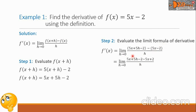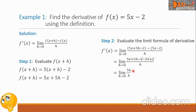So we have now 5x plus 5h minus 2 minus 5x plus 2. We can see that some terms in our numerator can be simplified or combined together. Look at this 5x — we have negative 5x here, so they zero out each other. The negative 2 and the plus 2 will be 0 also. Writing again in simplified form, our function now becomes 5h over h. The h and the h can also cancel out.